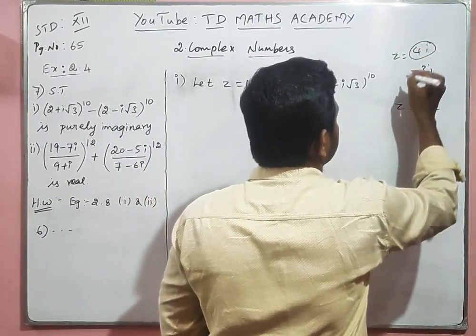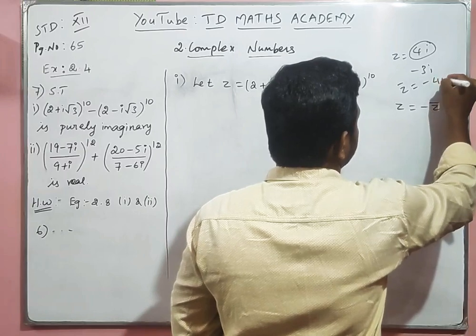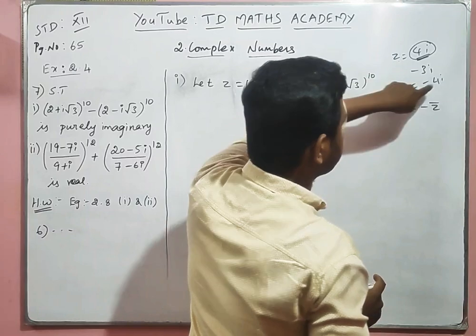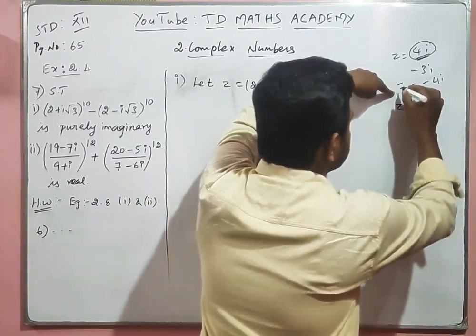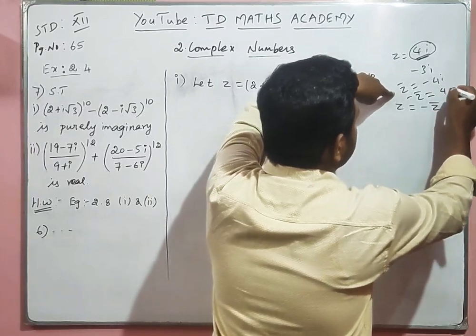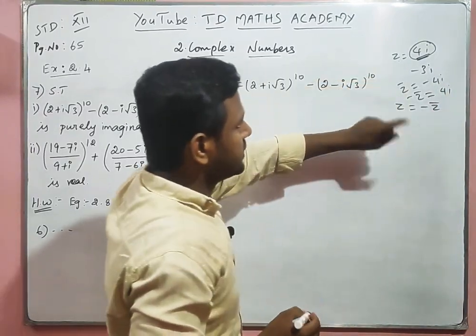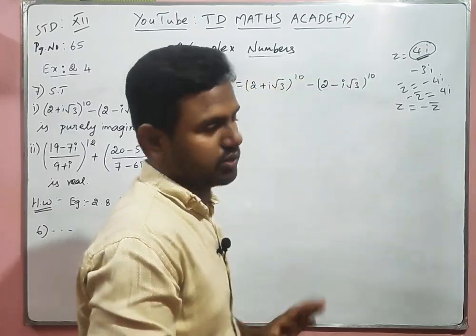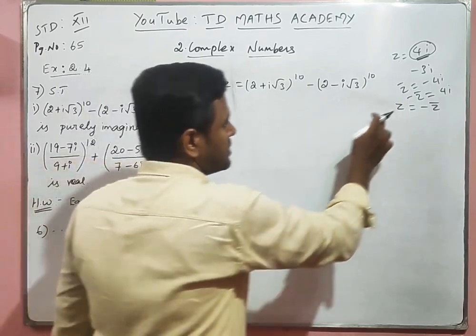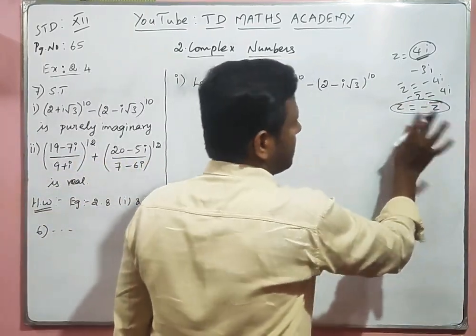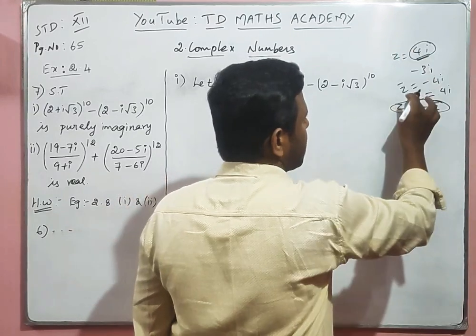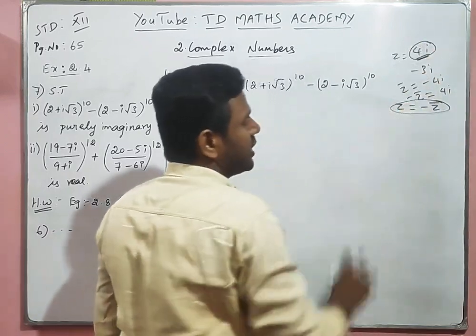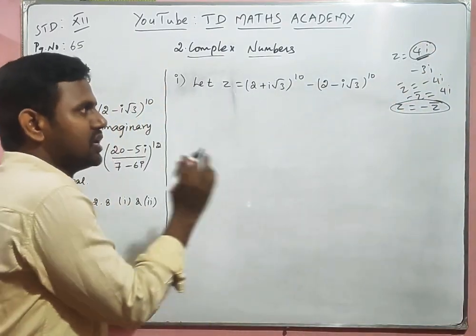Here Z is, say, 4ai and Z̄ is −4ai. Then Z = 4ai and −Z̄ = +4ai, so Z equals −Z̄. Therefore Z is purely imaginary. It is easier to use this property: prove Z = −Z̄, which implies Z is purely imaginary.